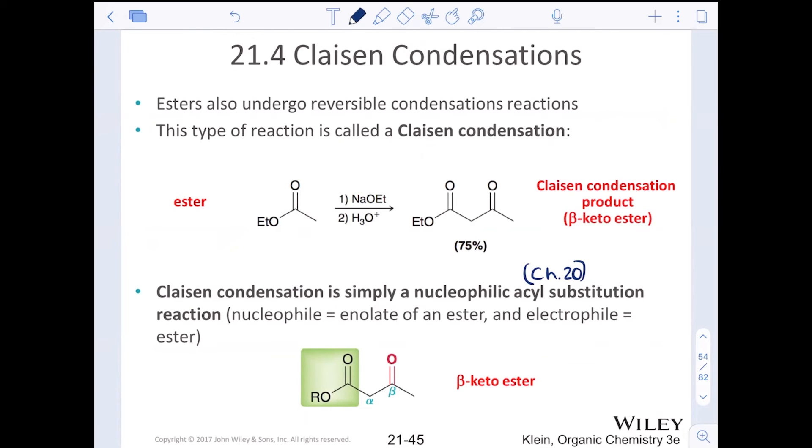Claisen condensation reactions, the nucleophile will be the enolate of the ester, and then the electrophile will be a second equivalent of ester. Just like we had two equivalents of aldehyde or ketones and aldol reactions, we can have two equivalents of esters. What forms is a beta keto ester. Notice here that H3O plus workup, this is an acid workup because we are forming a beta keto ester, which is an extremely acidic position. pKa of around 10. We need an acid workup to make sure that at the end of the day, our alpha position is protonated and our molecule desired is neutral, not another enolate.